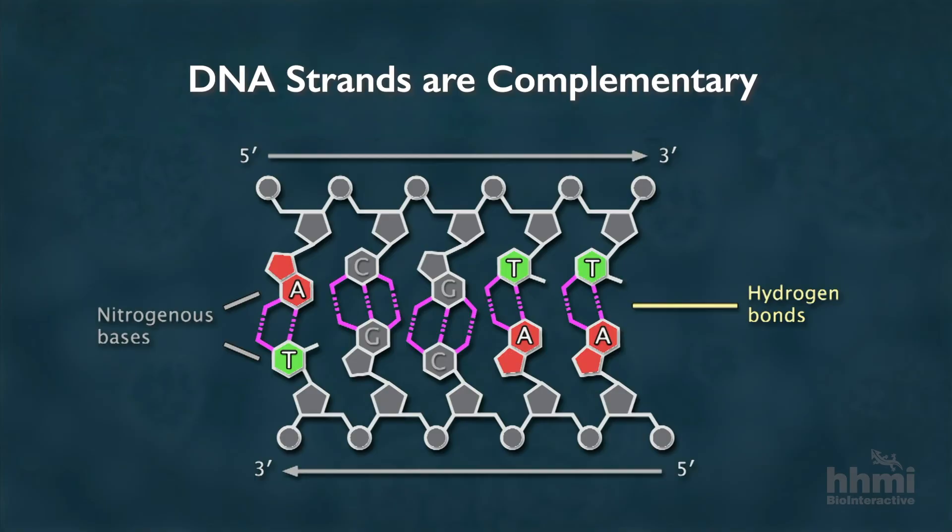Bases that bind to each other are called complementary, meaning matching. If you know the sequence of nucleotides on one strand, you can figure out the sequence of the other strand by knowing which bases are complementary.